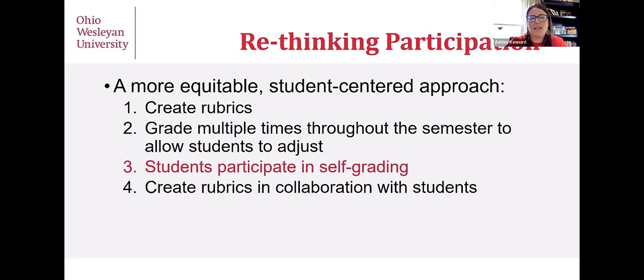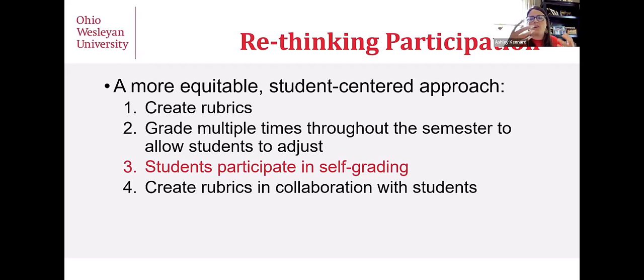One more thing about grading multiple times: so far I've actually not divided up their grade. Instead, we assess where they're at with participation throughout the semester, and that all culminates into their final participation grade. It's not necessarily cumulative because that doesn't really take into account their adjustments. I want to see that they're adjusting throughout the semester — maybe they had a very bad first couple of weeks but came around or slowly got more comfortable with the class, and I don't want them to get dinged for that.